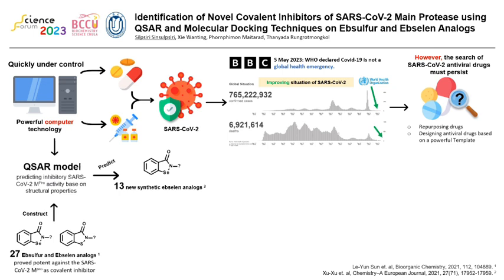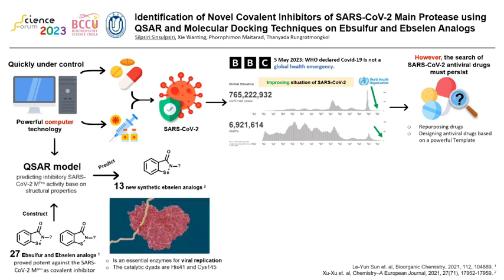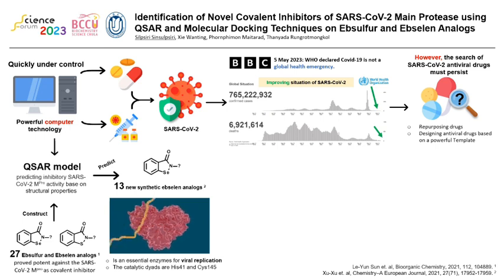The covalent inhibitor is an important inhibition mechanism that targets specific targets with stable bonds. The target of SARS-CoV-2 is the main protease, because the main protease is an essential enzyme for viral replication to create polyprotein cleavage function. The active enzyme has two critical amino acids: histidine 41 and cysteine 145. If we can inhibit the main protease, the virus cannot replicate itself.